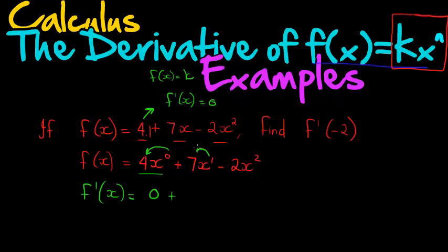Now for this one, 1 times 7 gives me 7, subtract 1 from here, that would become 0. So this becomes x to the power of 0, which is just 1.